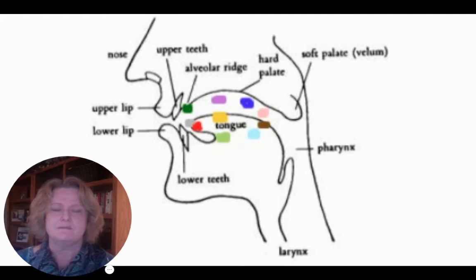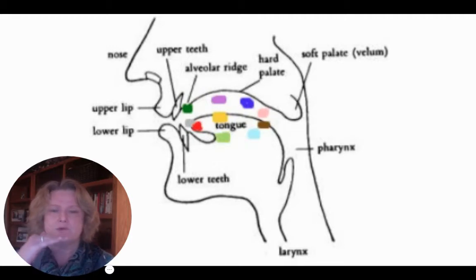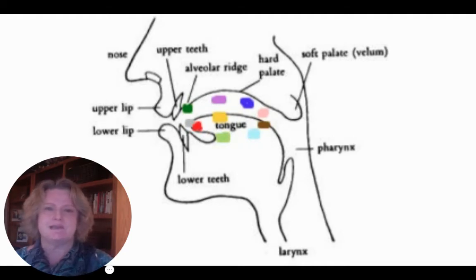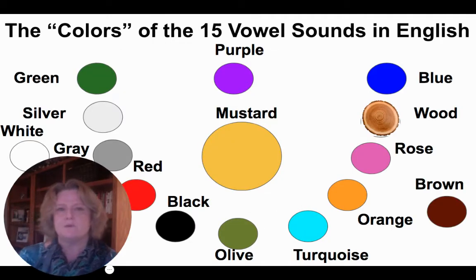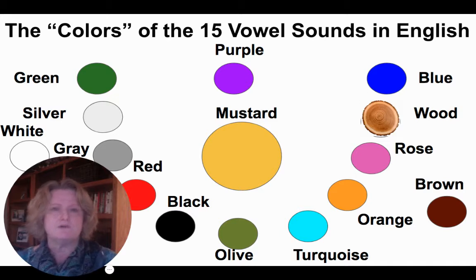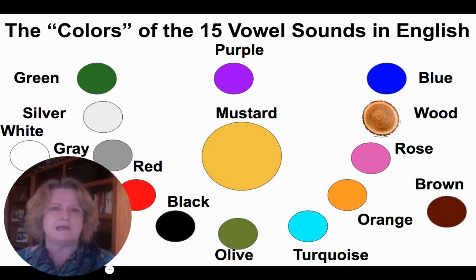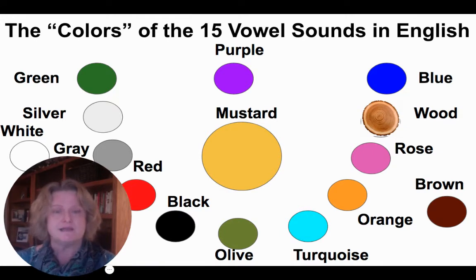If I want to make red, my tongue goes further to the front but kind of in the middle as far as up and down. For brown, my tongue goes further back and is also moving — these are called diphthongs. I'll go over the 15 vowel sounds relatively quickly, then look at how schwa — a short version of mustard — interacts with almost every single word in English.